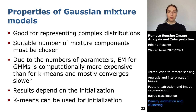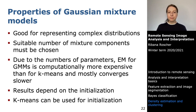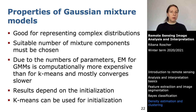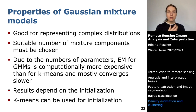To initialize EM with k-means: run k-means several times, take the best result (e.g., lowest sum of distances to means), use those means as initial means for EM, compute covariance matrices from the k-means clusters for each mixture component, and initialize mixing coefficients to equal values or derive them from the clusters. This ensures fast convergence of the EM algorithm.